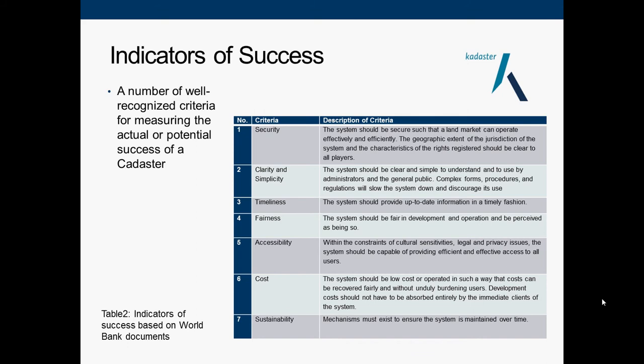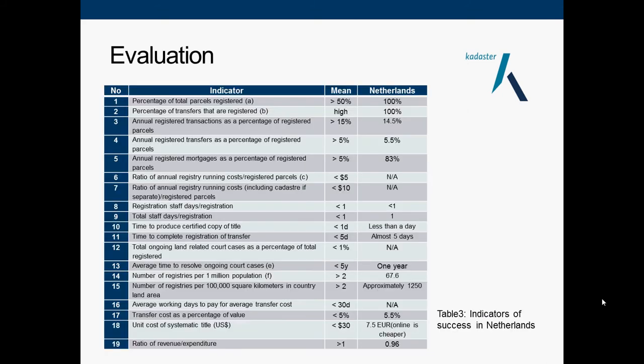There are criteria defined by the World Bank to assess how successful a cadastre system is in a country, evaluated through specific indicators. Filling in the table with information for the Netherlands shows that in most cases the indicators meet the benchmark mean amount, except for the ratio of revenue, which is less than the mean.